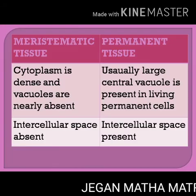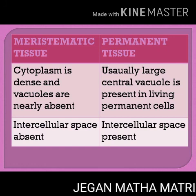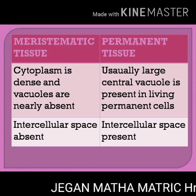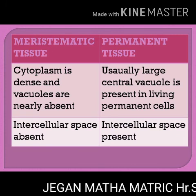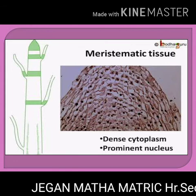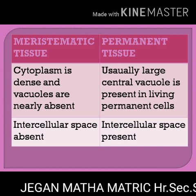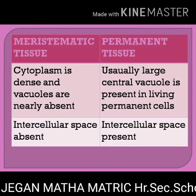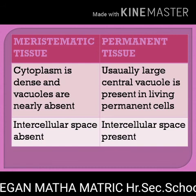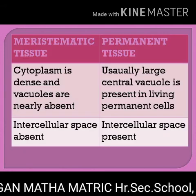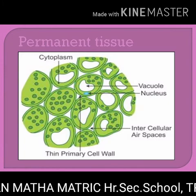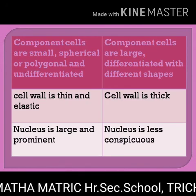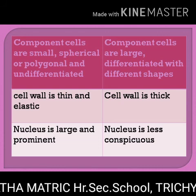Differences between meristematic tissue and permanent tissue: Meristematic tissues have dense cytoplasm and vacuoles are absent. In permanent tissue, usually large central vacuoles are present in living permanent cells. In meristematic tissue, intercellular space is absent. In permanent tissue, intercellular spaces are present.